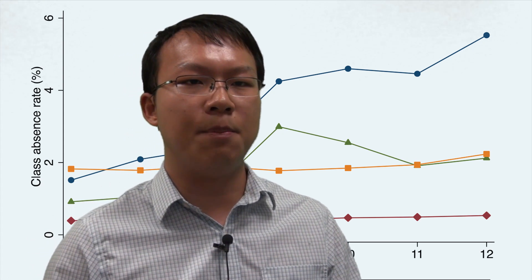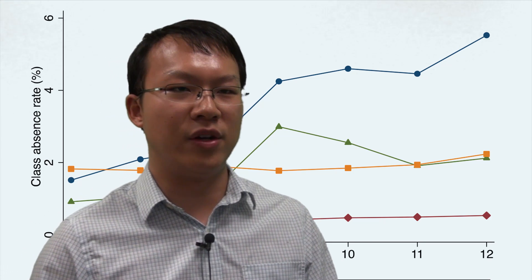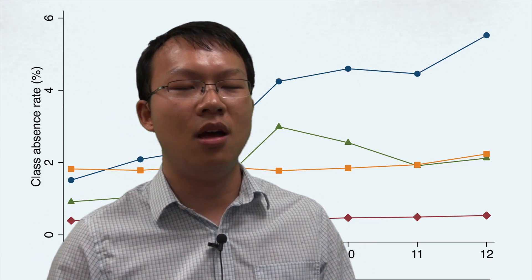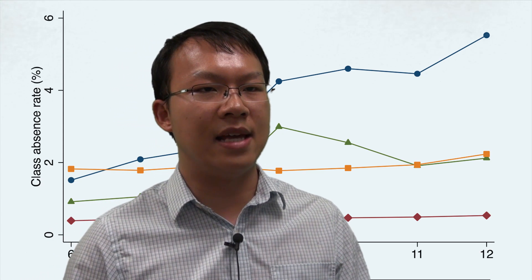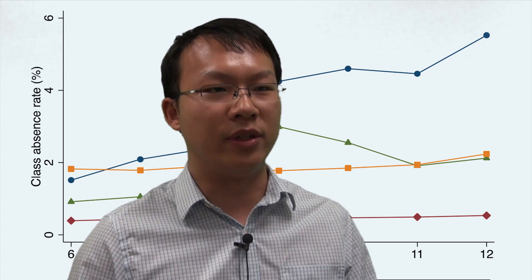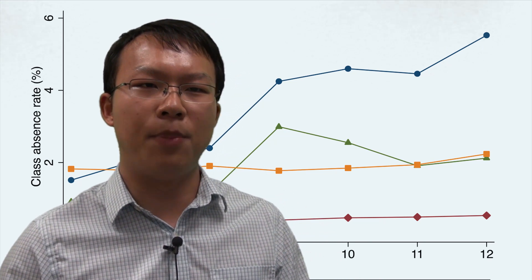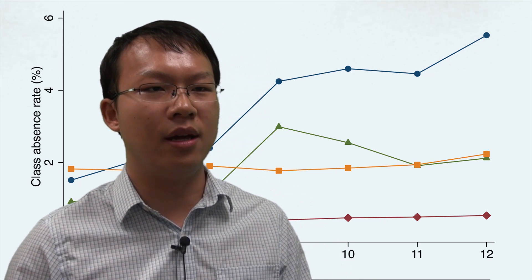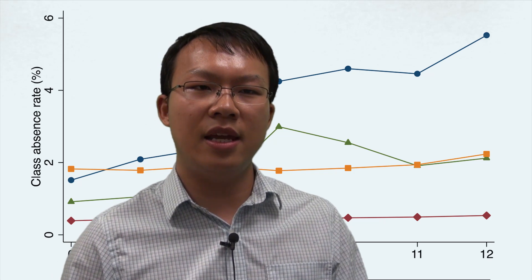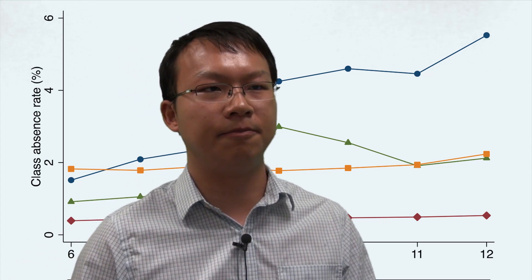Conventionally, when a student misses more than 10% of their classes, we consider them chronically absent. When we only consider class absences on days that a student is full-day absent, the average chronic absence rate is 9% across all grades and years. After incorporating part-day absences, however, this rate jumps to 24% — more than doubling — indicating that we significantly underestimate chronic absence rates if we ignore part-day absences.